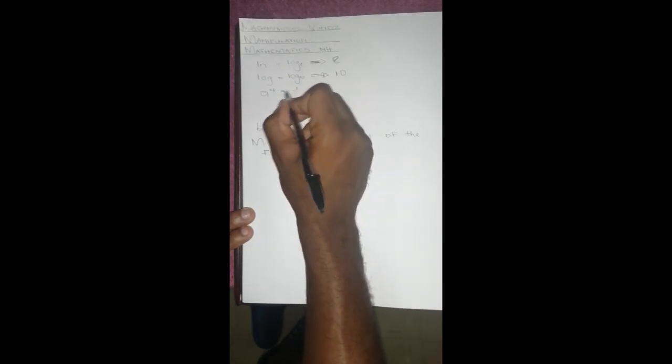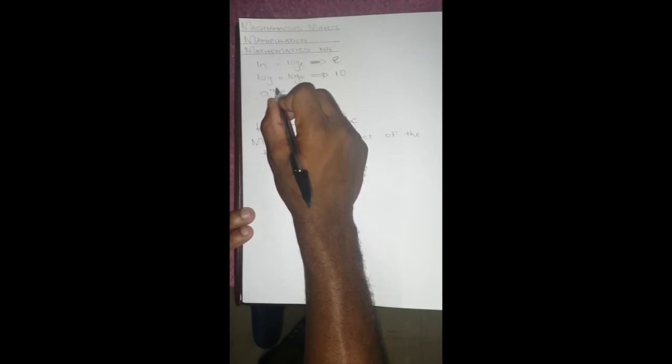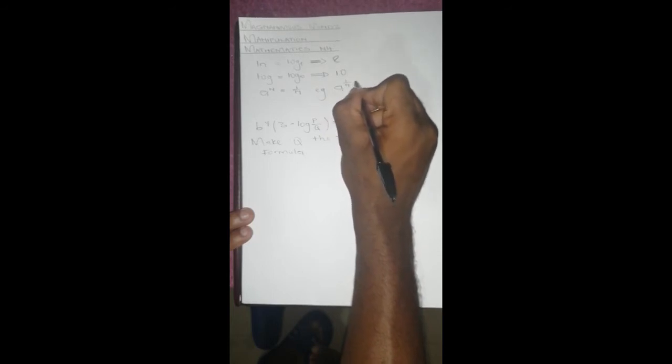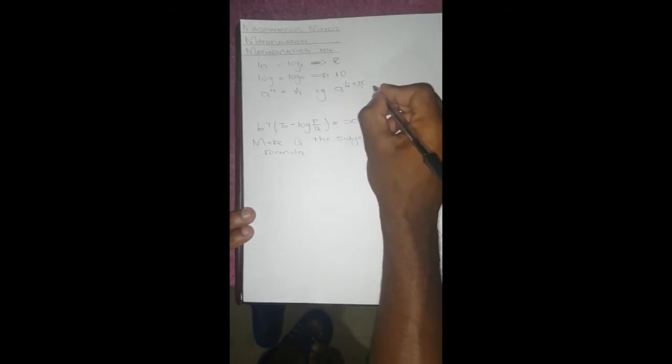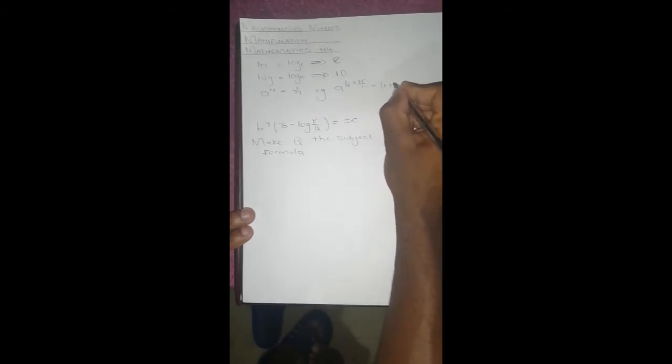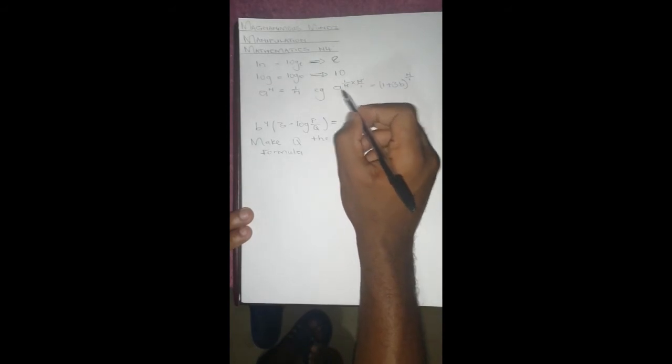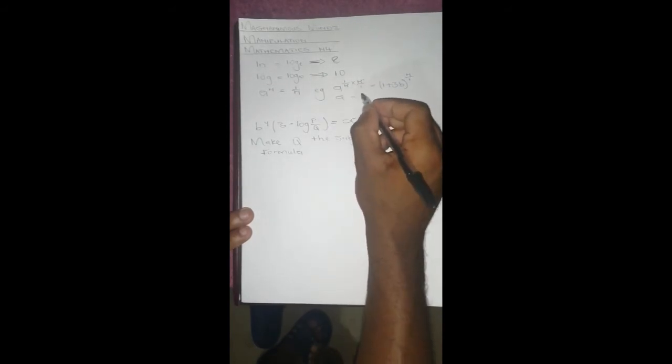And then with a to the power n, if you want to cancel n, usually you have to multiply this power with 1 over n. For example, a to the power 1 over n, you will multiply it with n over 1. This and this cancels out. And even on the other side, let's say you have 1 plus 3b whatsoever, you also have to multiply with n over 1. So on this side it will cancel out and you're left with a equals to 1 plus 3b to the power n.